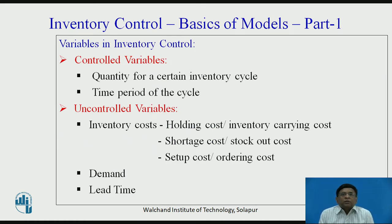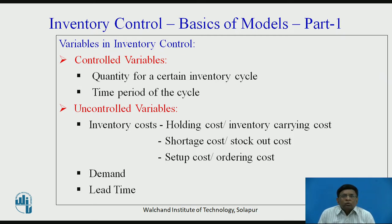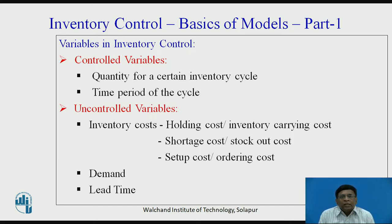Coming to the variables, which is the main part of our discussion today. All variables related to inventory control are grouped into two groups: one is controlled or controllable variables, and second is uncontrolled variables. Controlled variables are like quantity and time. Any inventory model cycle basically constitutes quantity on the vertical axis and time on the horizontal axis. Quantity and time define the inventory model.